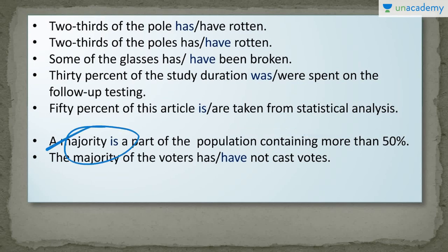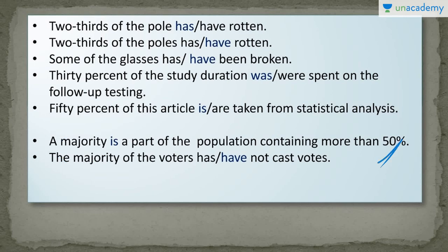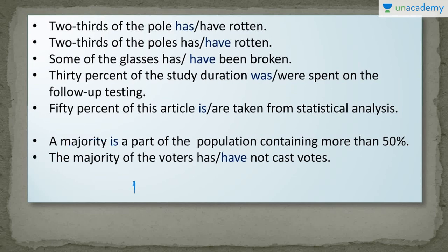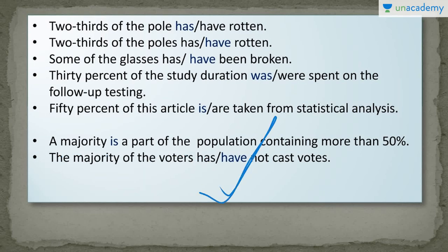Next is about 'majority.' The word majority is an indefinite quantity. But if majority is used as a subject on its own, remember that majority is singular. So the sentence 'A majority is a part of the population containing more than 50%' uses a singular verb because there is no 'of the' construction — the main subject is majority itself. But in the sentence 'The majority of the voters have not cast votes,' majority is followed by 'of,' so the main subject is 'voters,' which is plural. That is why I have chosen 'have,' and the sentence becomes: 'The majority of the voters have not cast votes.'